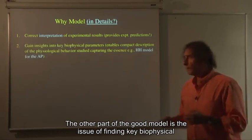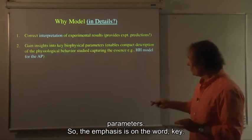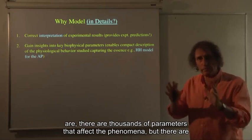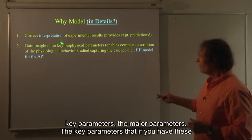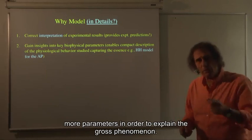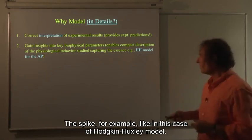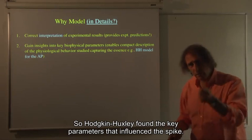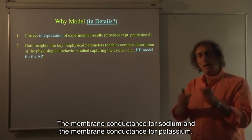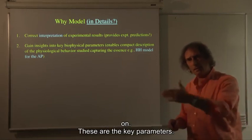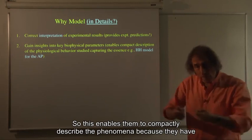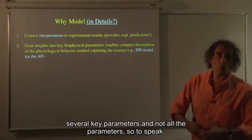And indeed, Hodgkin-Huxley did predict the refractory period. They did predict, and we did not discuss it, the spike velocity within the axon. They predict aspects that were not directly put into the model. So interpretation and predictions are a very important part of a good model. The other part of the good model is the issue of finding key biophysical parameters. So the emphasis is on the word key. Because if you have the key parameters, not all the parameters, because there are thousands of parameters that affect the phenomena. But there are key parameters, the major parameters. The key parameters that if you have these parameters in your model, then your model behaves appropriately, and you do not need more parameters in order to explain the gross phenomena. So Hodgkin-Huxley found the key parameters that influence the spike.